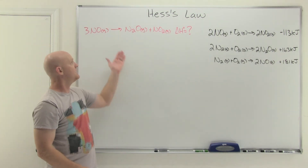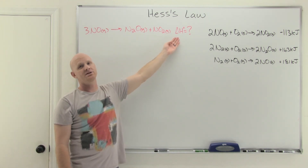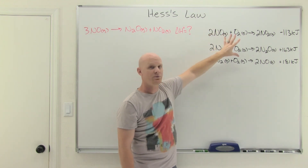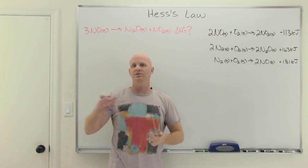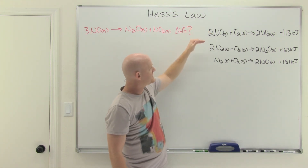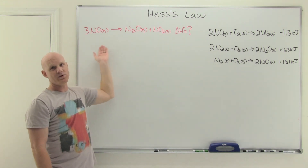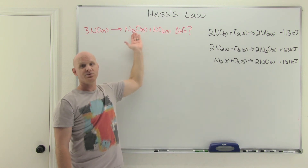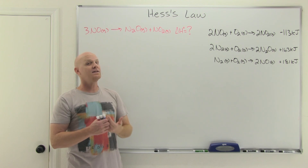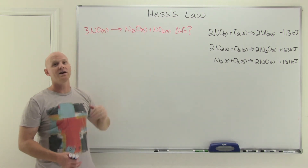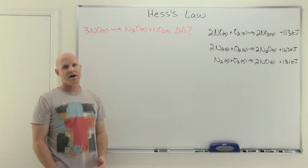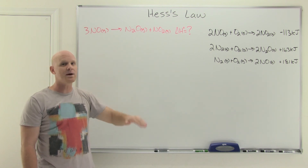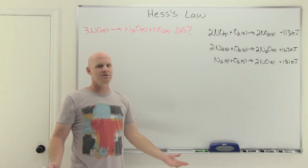In our first application of Hess's Law, the desired reaction is given and the goal is to find its delta H. You're provided with three reactions and their corresponding delta H values, and you have to figure out how to manipulate these — reverse them, cut them in half, double or triple them — so they add up to give exactly the desired reaction. This works because delta H is a state function: it is independent of pathway. As long as you start with the same reactants and end with the same products, delta H will be the same regardless of the path taken.